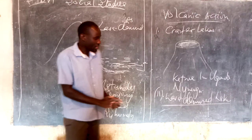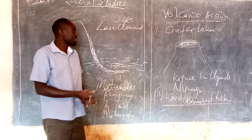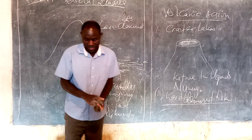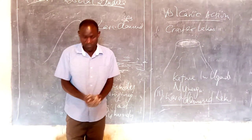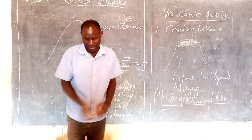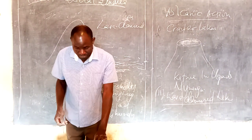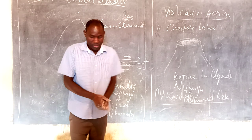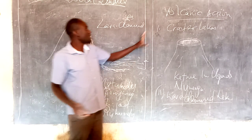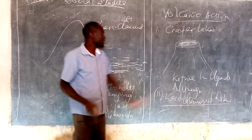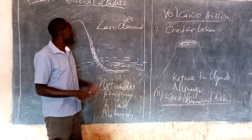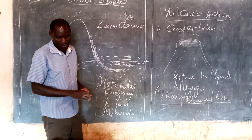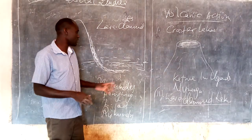Now we are going to look at another type — lakes that were formed as a result of downwarping. I hope you have understood how volcanic lakes were formed. Now we are going to look at lakes that were formed as a result of downwarping.